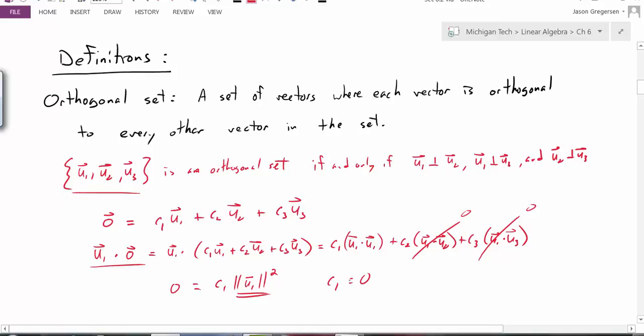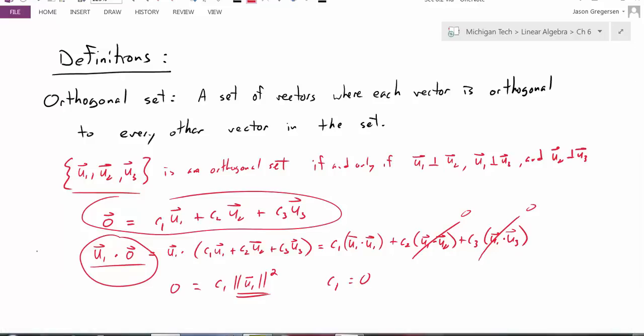And to show that c2 and c3 are also equal to 0, I would just take the dot product of u2 and u3 and show this exact same thing. And the result would be that this equation is only true if c1 is equal to 0, c2 is equal to 0, and c3 is equal to 0, which tells me that these vectors are linearly independent. So this is just a quick justification that if we have an orthogonal set, those vectors are linearly independent. And why is that important?